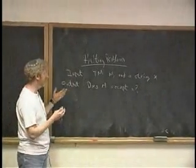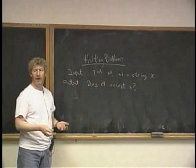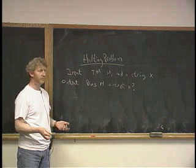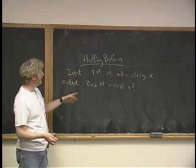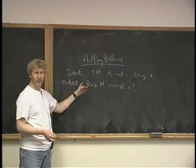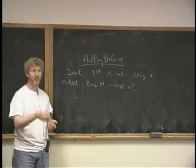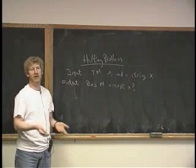And if it stops and says I accept, then you say, yes, I know the answer. It stops and accepts. And if it doesn't stop and accept, then what do you do? Well, that's where you get in trouble with that method. That method's guaranteed to answer yes when it does accept x. But if the answer is no, if it doesn't accept x because it runs in some infinite loop, then your way of determining that will just be in an infinite loop.